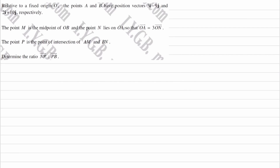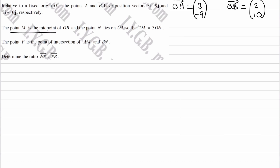We have two position vectors of A and B. O to A is (3, -9), and O to B is (2, 10). We're told that M is the midpoint of OB, and N lies on OA such that OA is equal to 3 lots of ON.